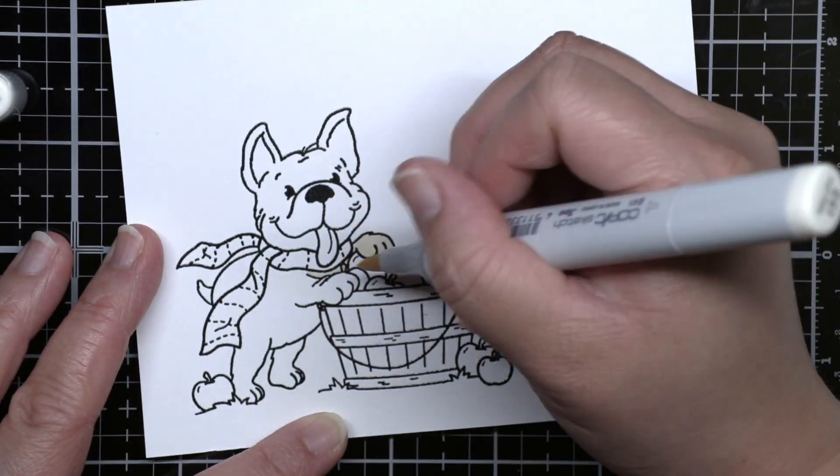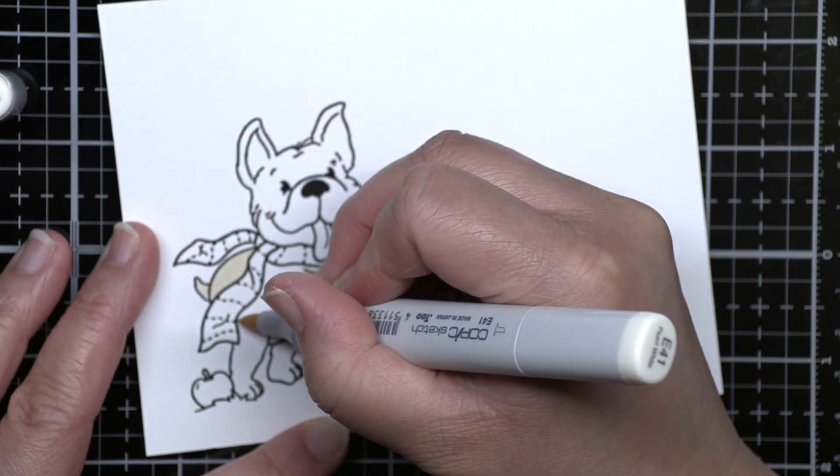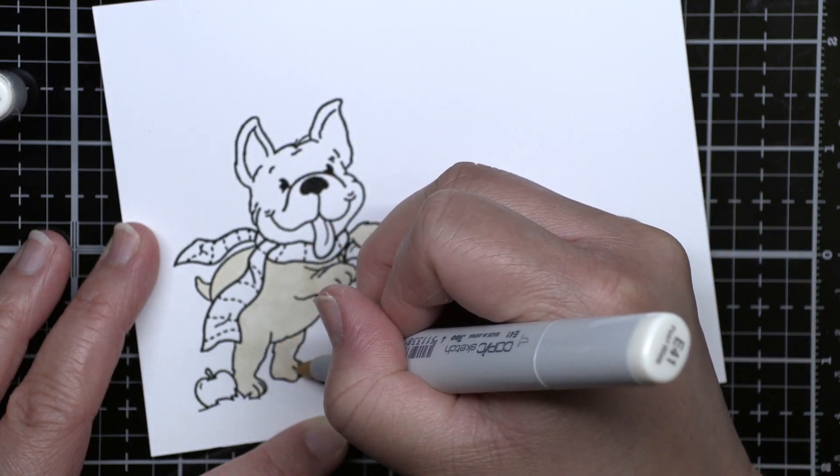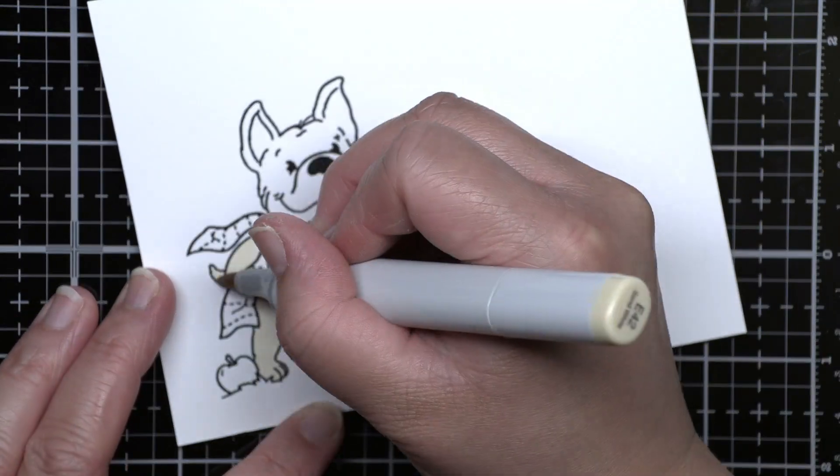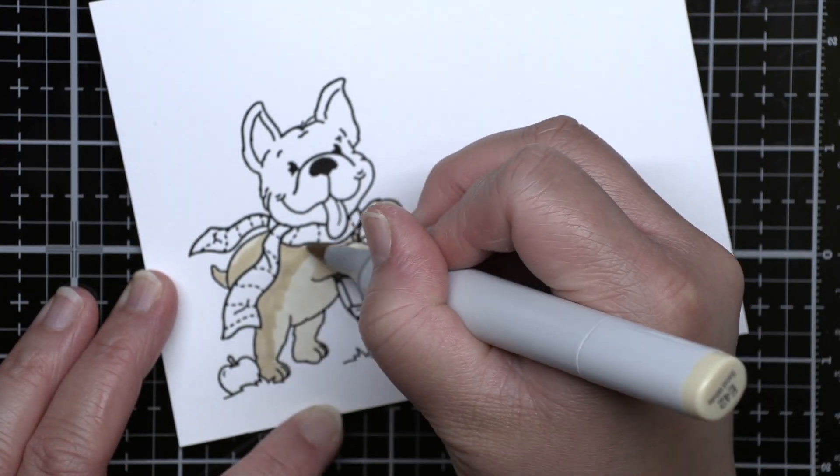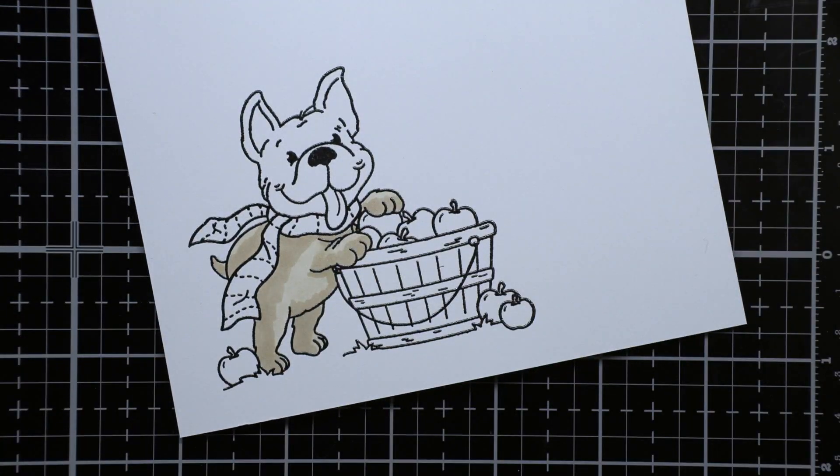I've sped up my coloring so that the video won't go on forever, but I'll list the markers I used in the accompanying blog post. You'll also see the place where one of my newly-filled Copic markers blooped a bit on my pup's head, but thanks to some blending I was able to work it out.